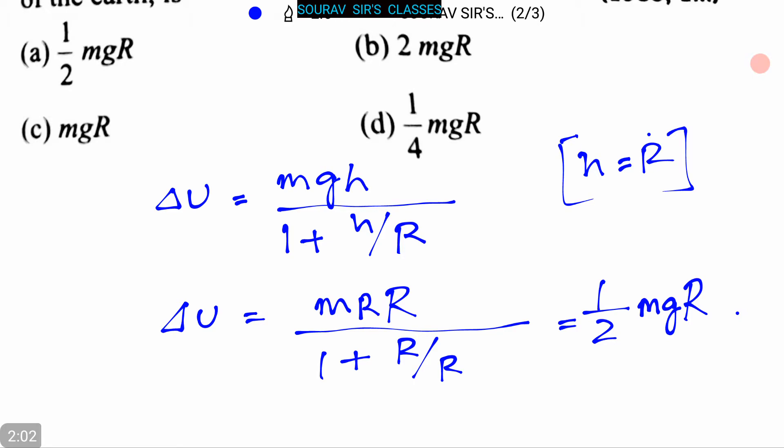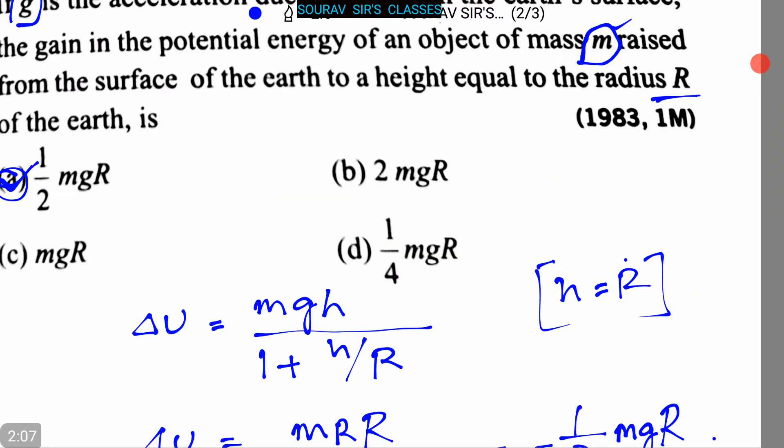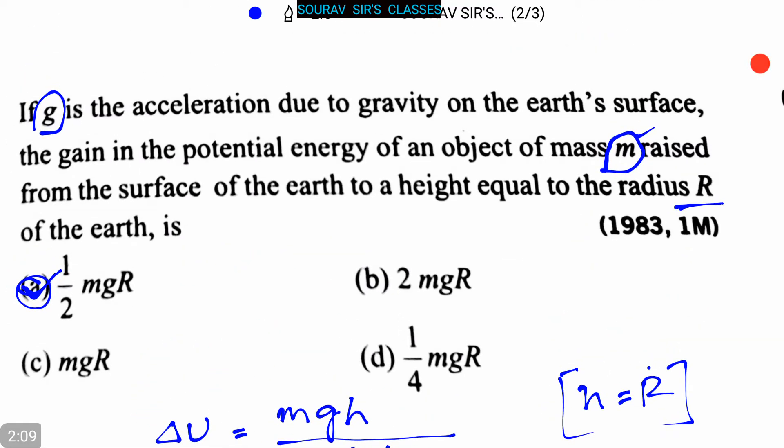So here option a, that is 1/2 mgR, is the correct answer. The gain in potential energy from the surface of the earth to a height equal to radius R of the earth is 1/2 mgR. This is our answer.